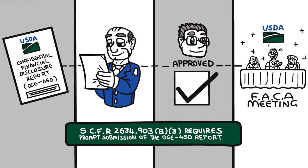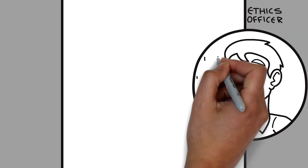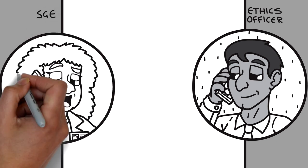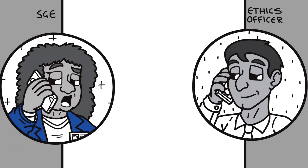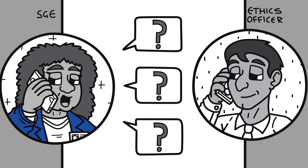Fortunately, the USDA Office of Ethics is available to answer questions from all SGEs serving on USDA advisory committees. Other federal agencies will have their own ethics advisors assisting their agency's SGEs. You are always encouraged to reach out to your agency's ethics officials to answer any questions you may have.